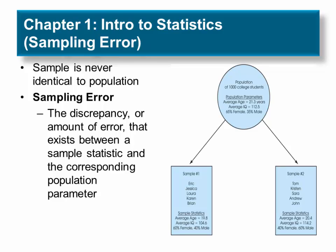Notice that the sample statistics are different from one sample to another, and all of the sample statistics are different from the corresponding population parameters. The natural differences that exist, by chance, between a sample statistic and a population parameter are called sampling error.